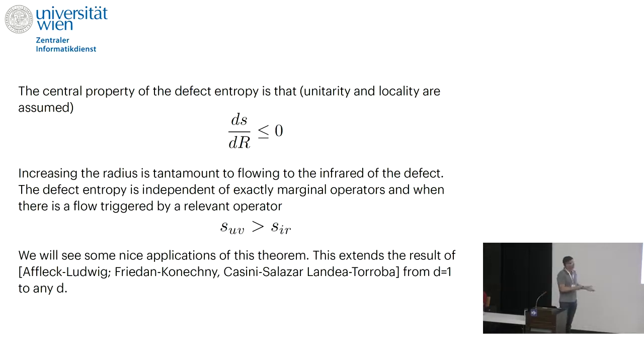First of all, this immediately implies that it's independent of exactly marginal operators. Sometimes line defects have marginal operators. And further, it implies something like the entropy of the ultraviolet fixed point of the line defect must be bigger than the infrared fixed point. So I'll show you several applications of this theorem. Of course, this is very well known in condensed matter in one plus one dimensions. This has been applied extensively for the Kondo problem and many other problems. This goes back to Affleck and Ludwig, Friedan Konechny, and recently also made contact with quantum information theory by Casini, Salazar, Landea, and Toroba.